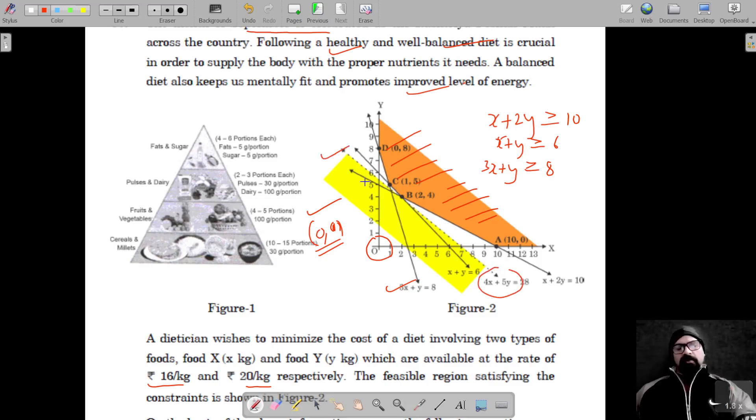We will not consider this circled line because this was plotted to find the common region between these two planes. So our given constraints are: x + 2y ≥ 10, x + y ≥ 6, 3x + y ≥ 8, x ≥ 0, y ≥ 0. These are the constraints for the feasible region, for the first part.